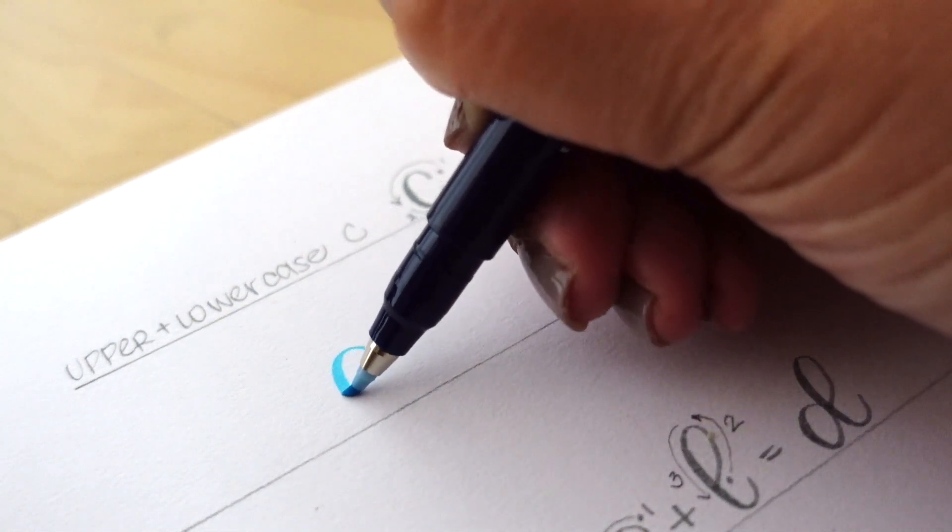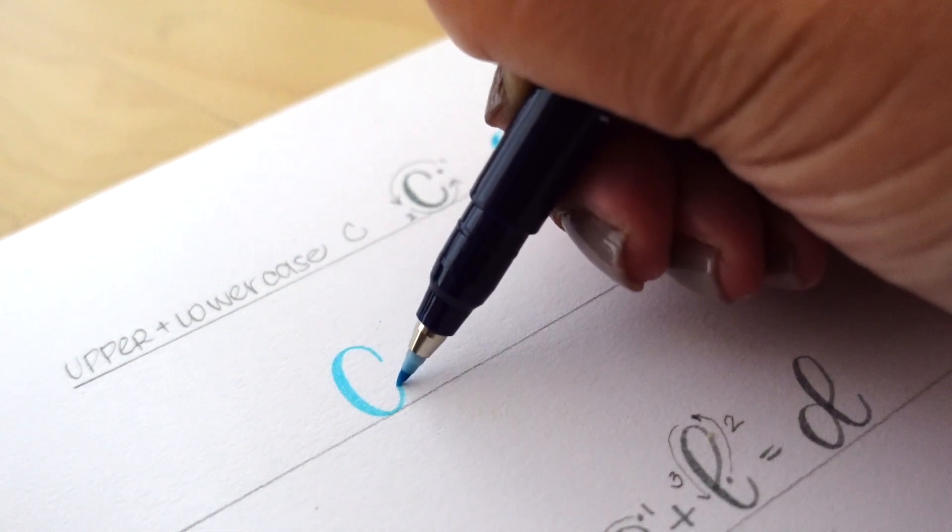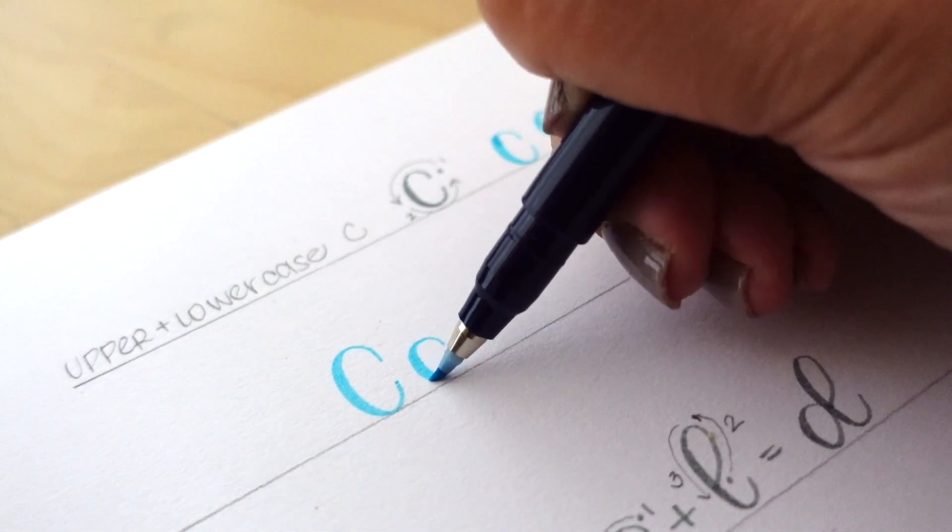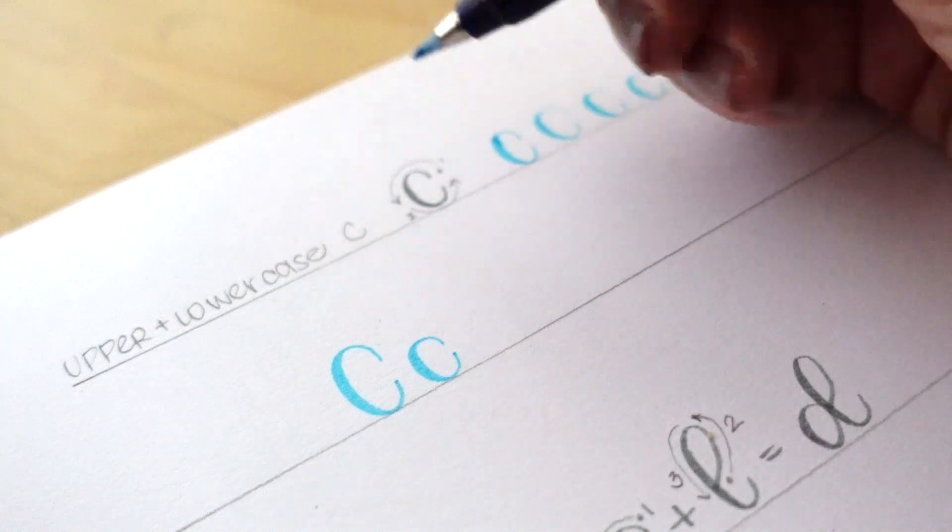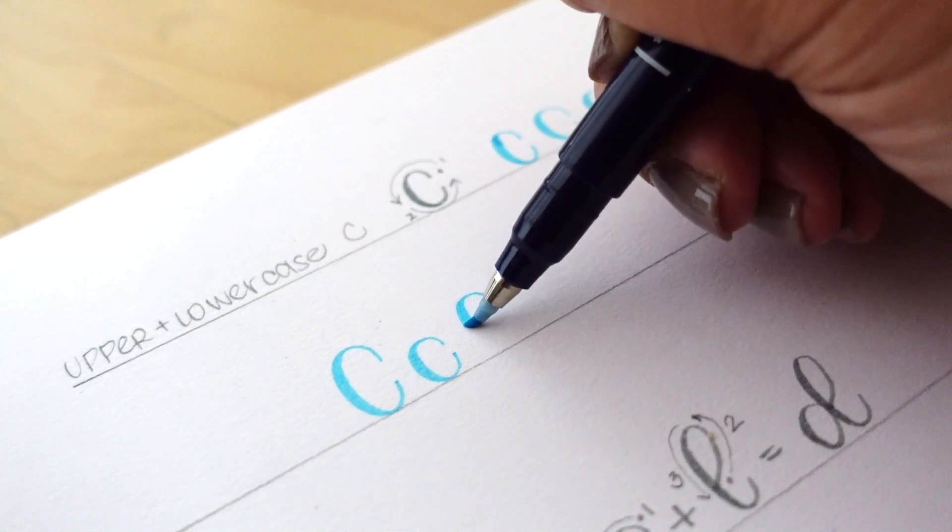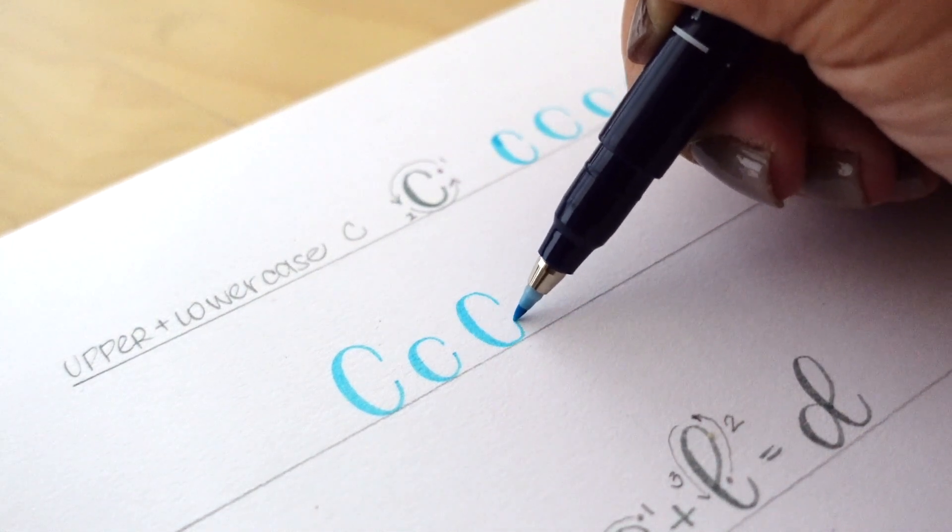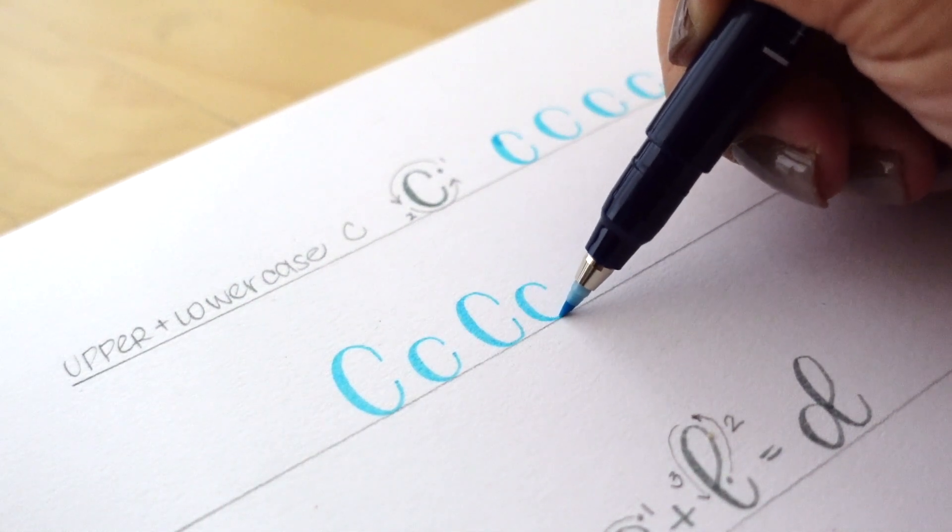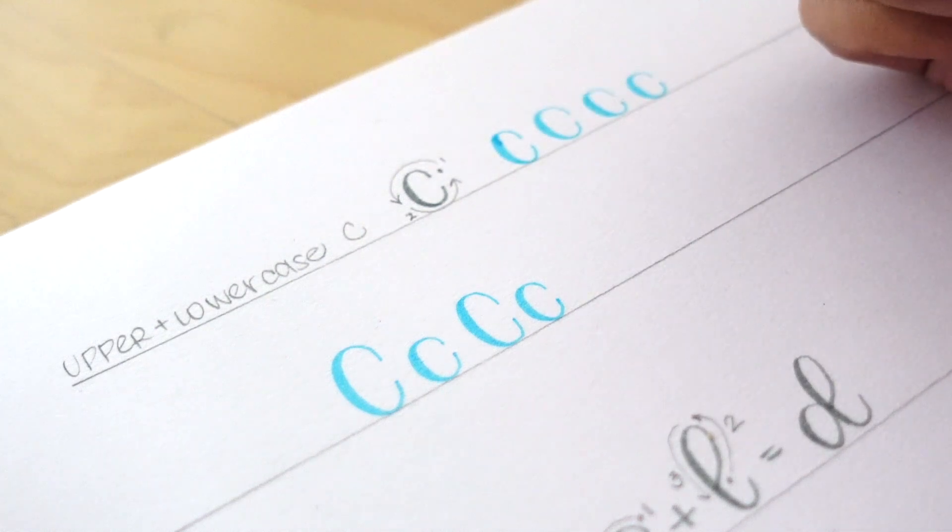The difference between the upper case and the lower case C's is the size. As you can see on this line, as you get more familiar and you're starting to develop your own style, you can add a little flourish on either C. For me, it just depends on how formal the lettering piece is.